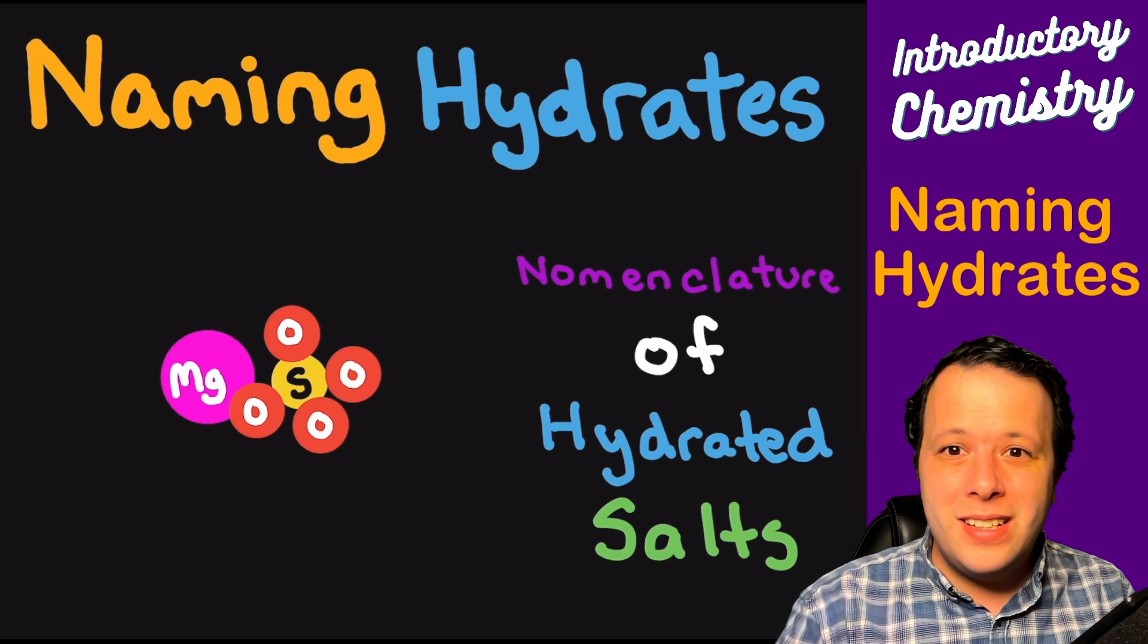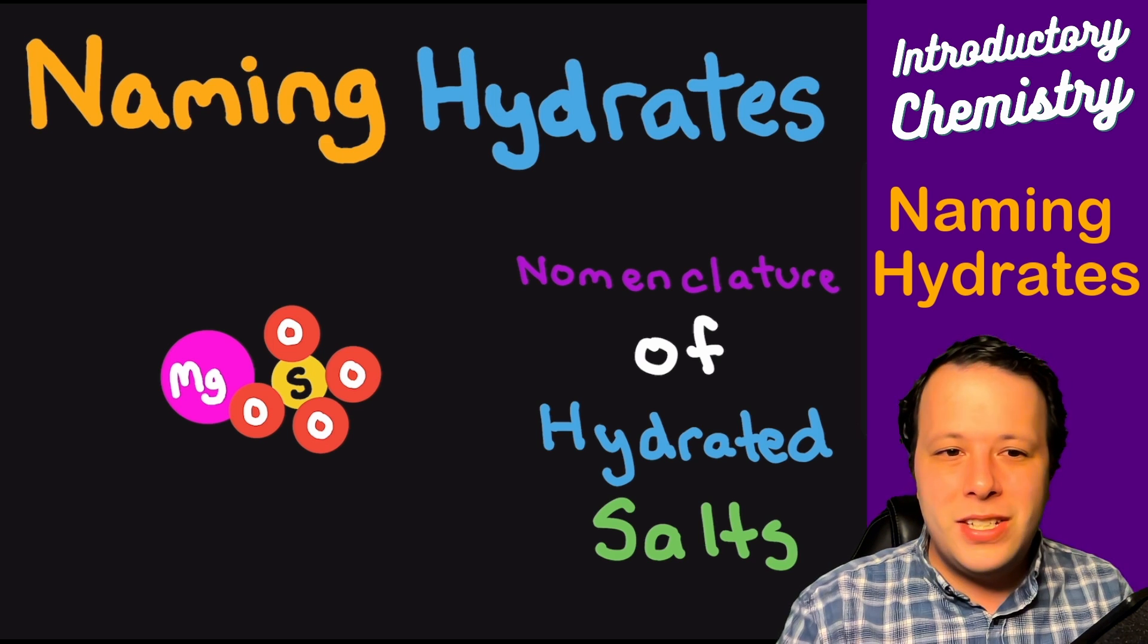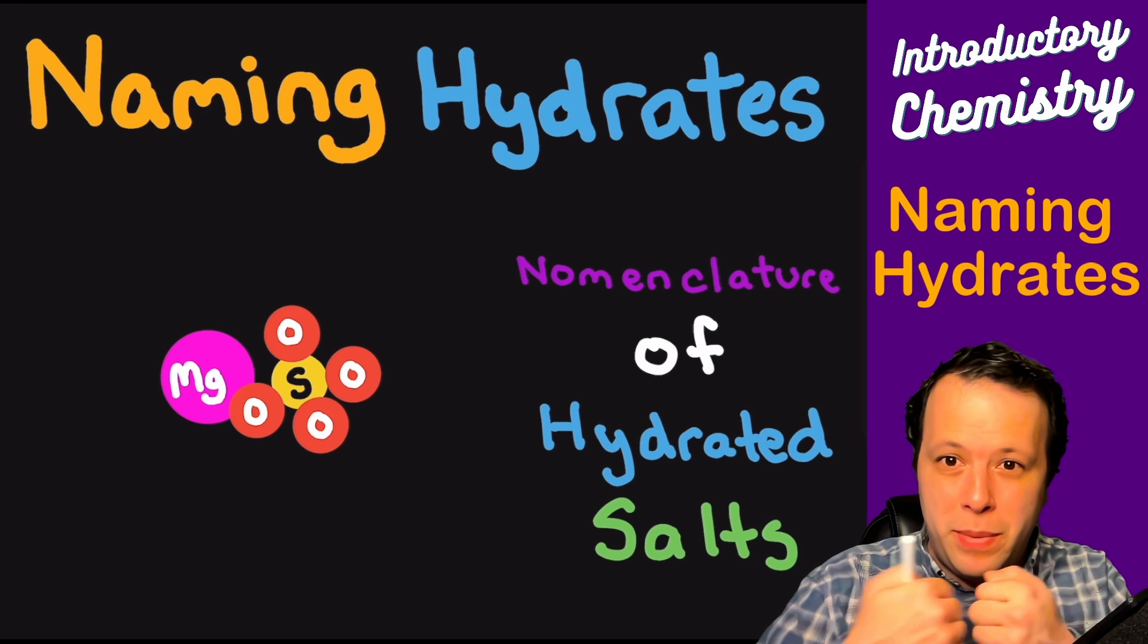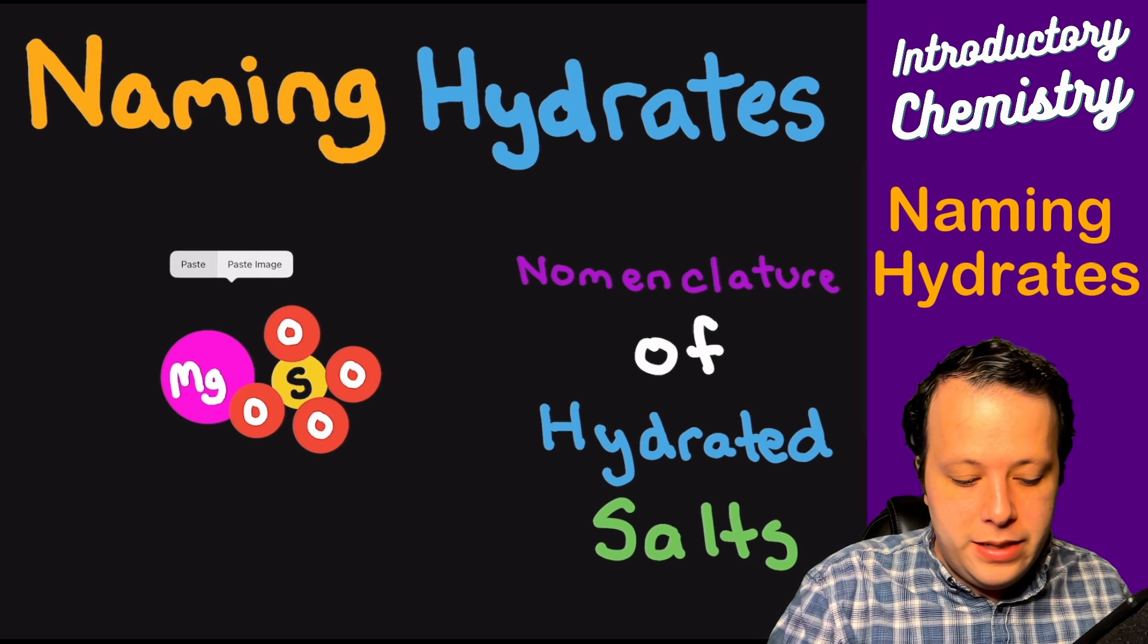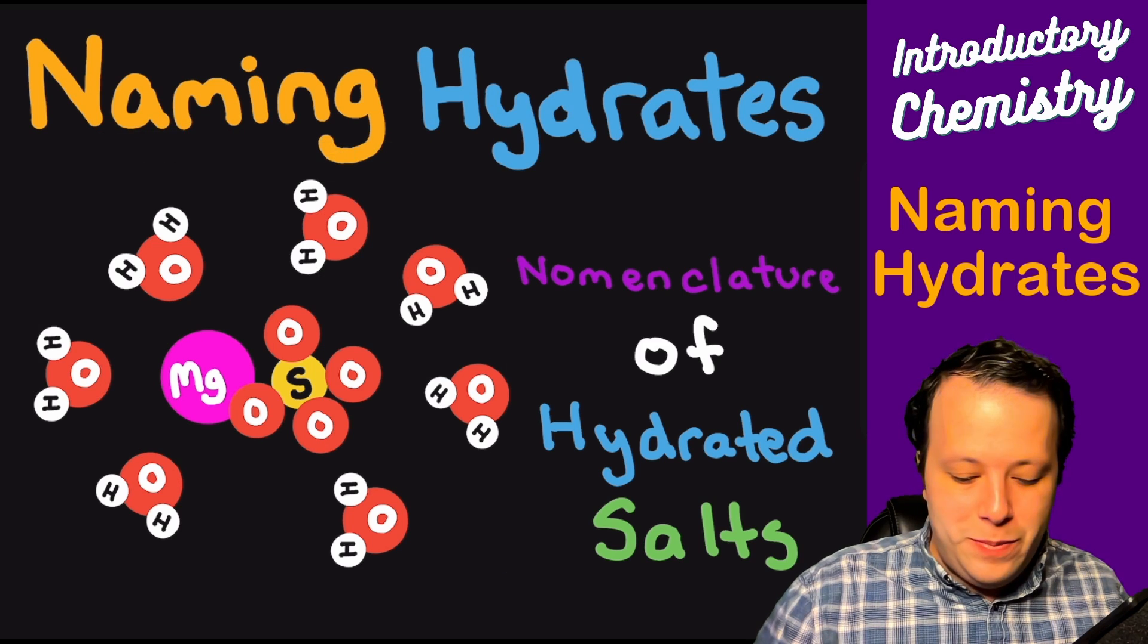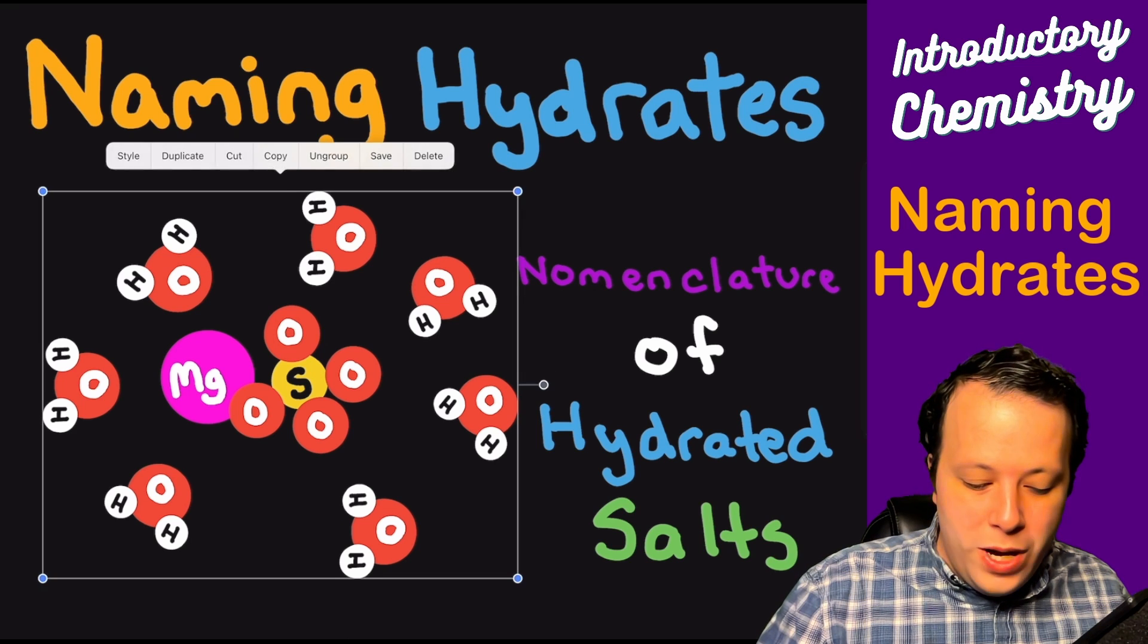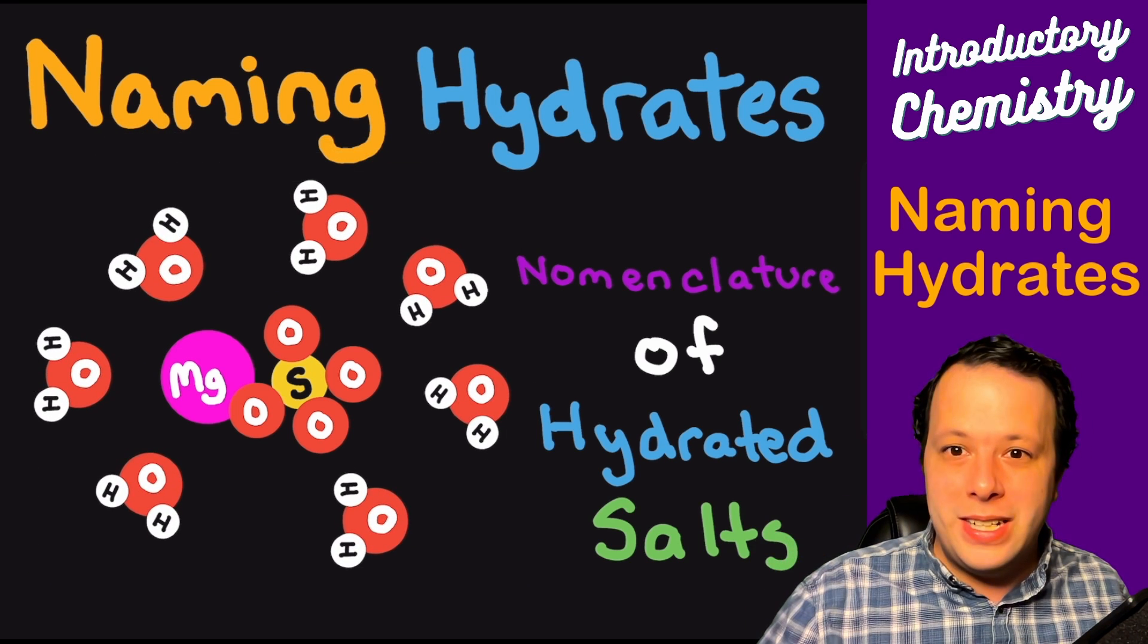Specifically, we're going to learn how to name hydrates. So what exactly are hydrates? Well, typically you'll have a bunch of different ionic compounds. So whenever you have a cation, which is your positive charge, and an anion that are bonded together, very commonly you'll see that they will be essentially surrounded by water molecules.